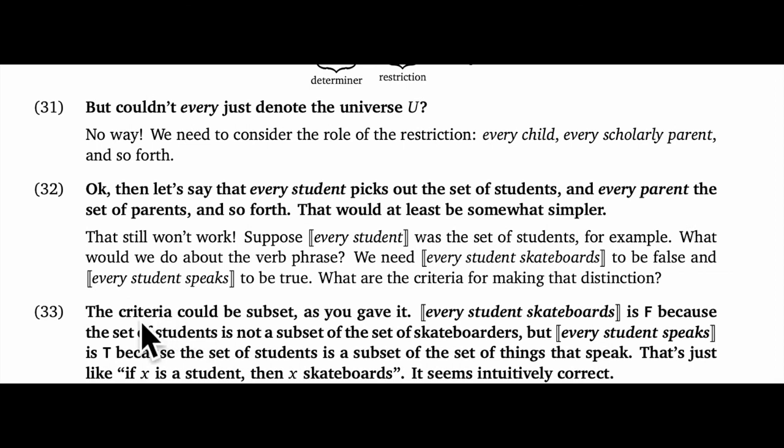And here my imagined student falls into my rhetorical trap. The student says: the criteria could be subset as you gave it. The meaning of every student skateboards is F because the set of students is not a subset of the set of skateboarders. But the meaning of every student speaks is T because the set of students is a subset of the set of things that speak. That's just like saying if X is a student, then X skateboards, and it seems intuitively correct.